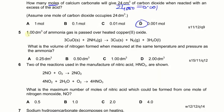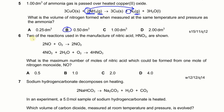Next: 1 dm³ of ammonia gas is passed over heated copper oxide. What is the volume of nitrogen formed? When dealing with gases, you can directly use volume ratios. According to the equation, 2 dm³ of ammonia produces 1 dm³ of nitrogen. Since we have 1 dm³ of ammonia, we get 0.5 dm³ of nitrogen gas.